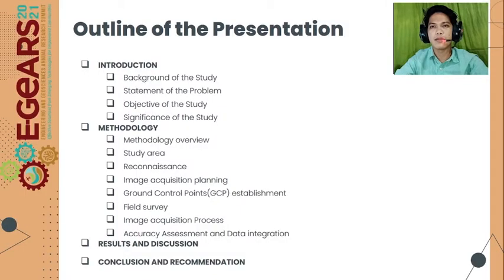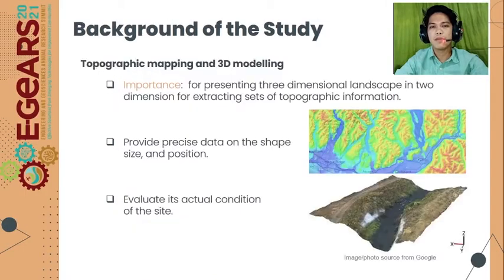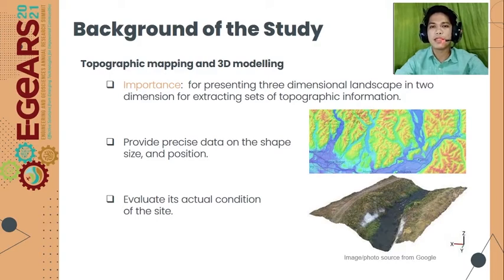Here is the outline of our presentation. Nowadays, creation of realistic 3D scenes and topographic mapping of a particular object is becoming more popular and is part of the modern age, where we can see numerous applications usually in engineering research. Specifically, topographic mapping of rivers and creeks including 3D modeling is important because it can represent the three-dimensional landscape in two dimensions and can be used to extract key sets of topographic information and provide precise data on shape, size, and position. It also evaluates the actual condition of a particular site.